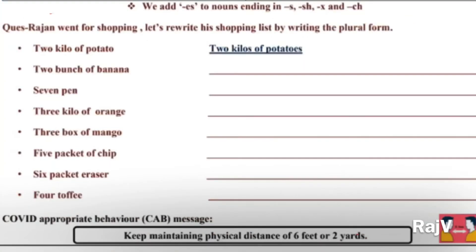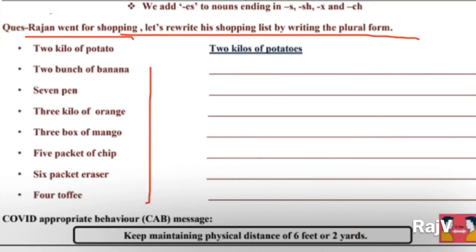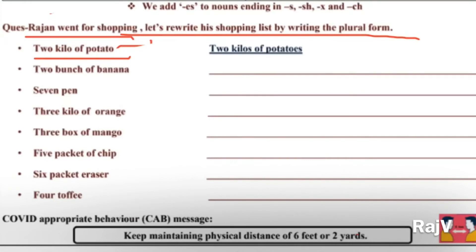Now let's move on. So now we have reached the last part of this worksheet. Ismein question aapko diya hua hai: Rajan went for shopping. Let's rewrite his shopping list by writing the plural forms. Yahaan par jo hai plural forms nahi hain, yeh kuch na kuch mistake hai. Samajh lijiye ki uske plural form correct karke aap ne usko likhna hai. Jaisi ki example ke liye diya hua hai: two kilos of potatoes.